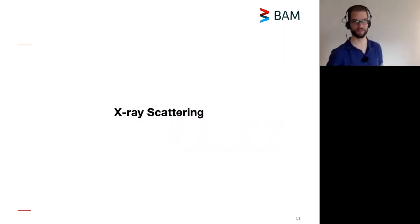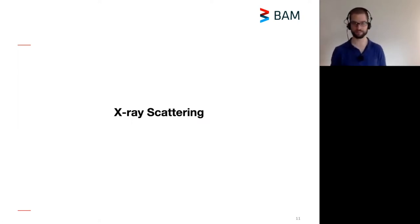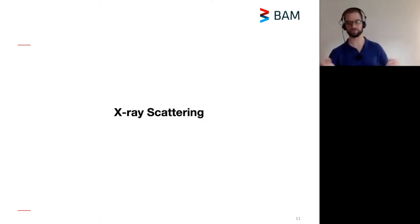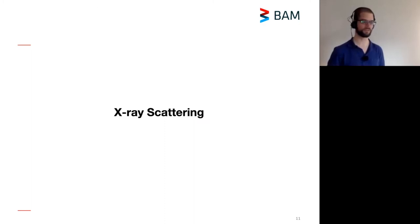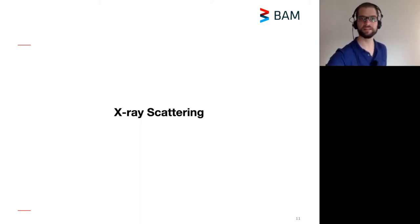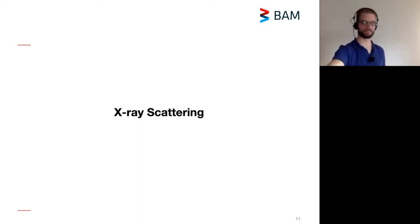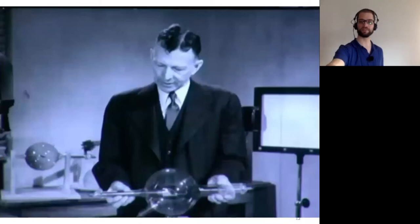What is x-ray scattering? As the name suggests, this is a form of scattering, which you can do with all kinds of radiation. You can do scattering with light — many of you will be familiar with dynamic light scattering. You can also do neutron scattering and electron scattering; electron diffraction is a subfield of electron scattering. However, x-rays are by far the coolest of them all, as explained by Dr. William Coolidge from General Electric's lab from the 1950s.